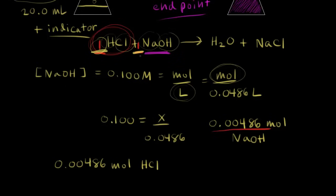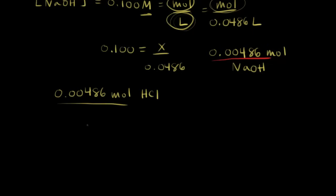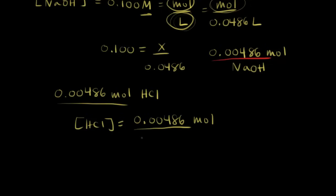Our goal was to find the concentration of HCl — the original concentration. Concentration, or molarity, is equal to moles over liters. We now know how many moles of HCl we had, and our original volume of HCl was 20.0 milliliters. Converting that to liters — moving the decimal three places — gives us 0.0200 liters. The concentration of HCl equals 0.00486 moles over 0.0200 liters.